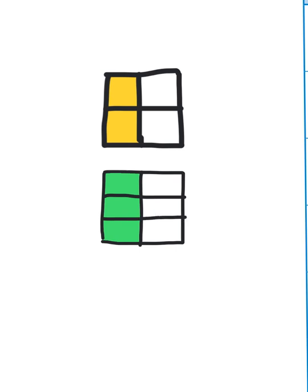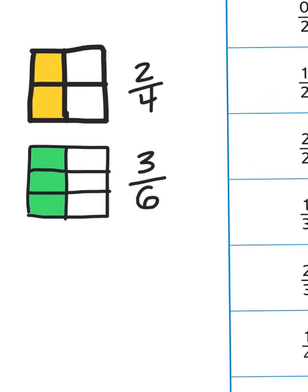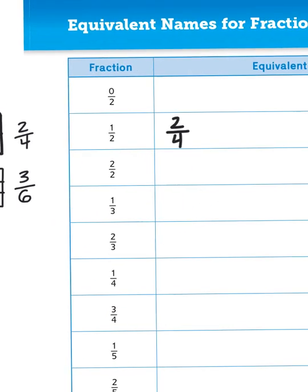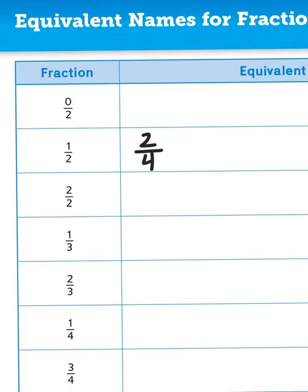What I've done is I've basically divided each half into three parts, so that creates a total of six parts. This fraction up here is 2 fourths because there are four parts total and two of them are shaded in. This one is 3 sixths because there are six parts total and only three of them are shaded in. Both 2 fourths and 3 sixths are equivalent to 1 half.